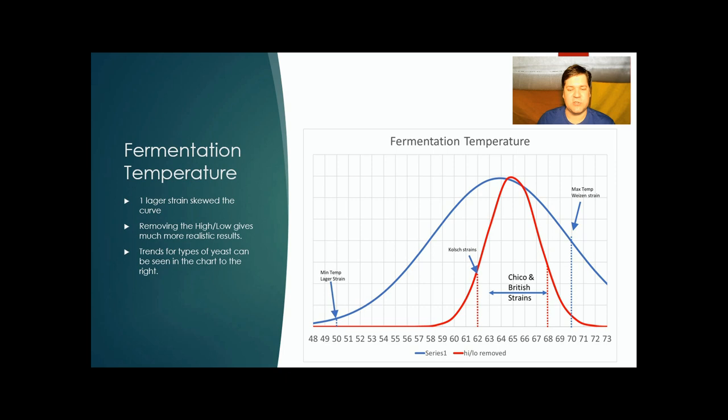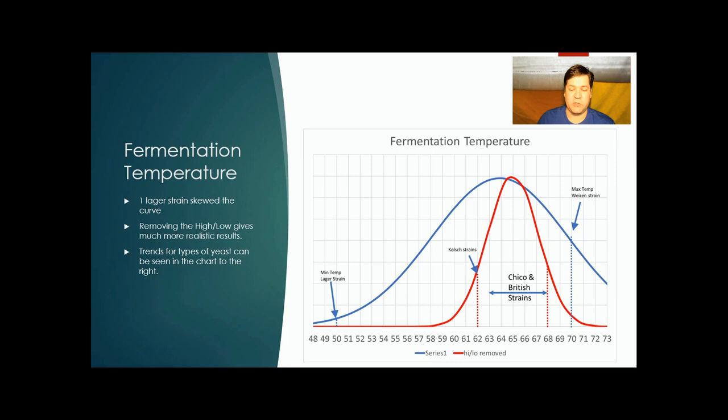This is where it gets kind of unique. Since we did have a lager strain in one of the styles, it really pulled out the bell curve, which is the blue curve, so I threw it out. I threw out the high and the low fermentation temperatures, tried to give you a sense of where people are picking these temperatures for the different strains of yeast. The max temperature of 70 was a Weizen strain. The low temperature ones in the 60s were the Kolsch strains. Chico ranged from 63 to 68. I would stay within this. Go colder if you're Kolsch, go warmer if you want those esters. If you want to go clean, somewhere between 62 and 65, I think is recommended.